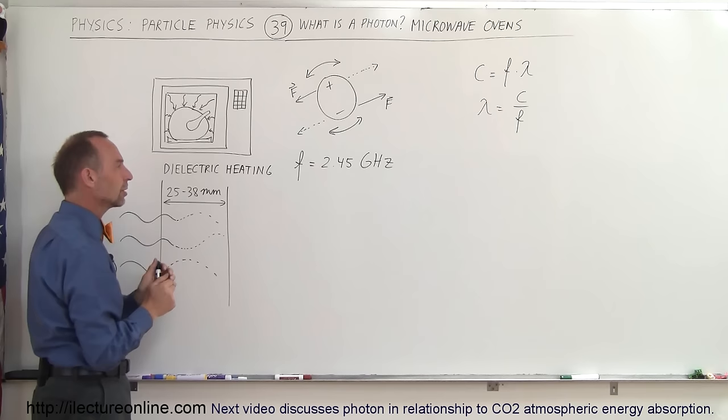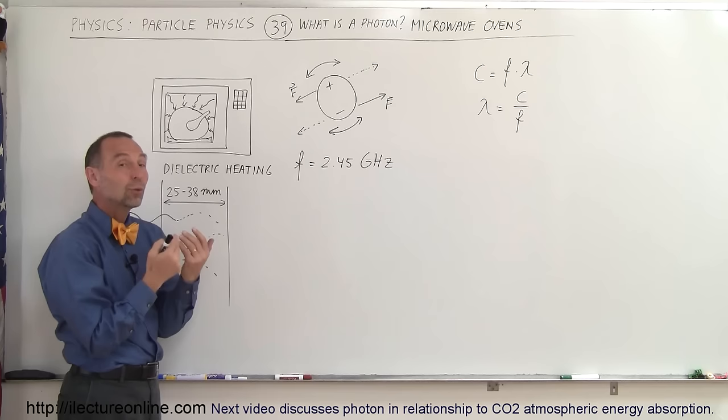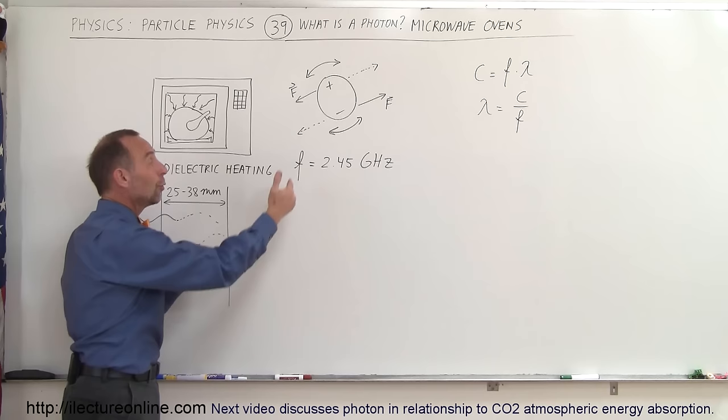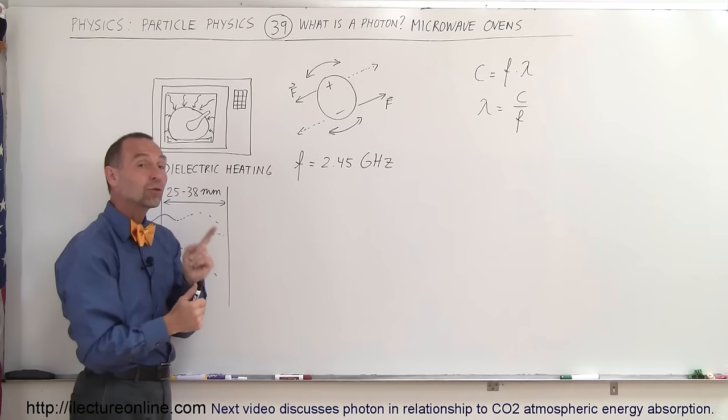Now the frequency at which the water molecules will vibrate back and forth inside food is 2.45 gigahertz. So what kind of wavelength microwaves do you need for that to work the best? Because you want the frequency of the microwaves to be in sync with the frequency oscillations of the water molecules inside the food. So we use the equation C equals F times lambda to find out the wavelength of the microwaves required to do so.